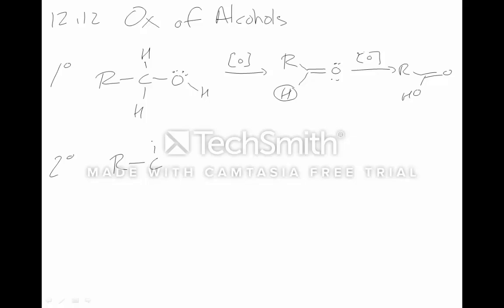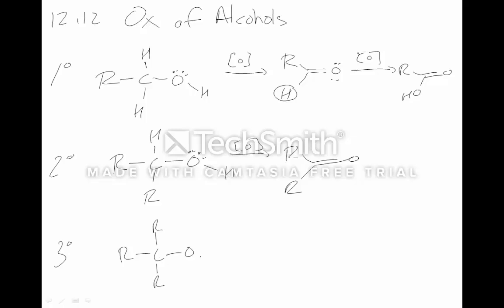A secondary alcohol only has one hydrogen in the first place, so it can get oxidized to a ketone — and that's it, it can't go any farther. Tertiary alcohols cannot be oxidized; these have no hydrogens, only groups. You've got to have a hydrogen next to the carbon to undergo oxidation. That's the take-home message — no reaction.